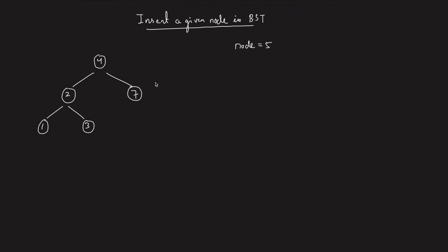Welcome back to the channel! Today we will be solving the problem: Insert a Given Node in a Binary Search Tree. The question gives you a value — say five — and you need to insert this value into the BST such that the BST property is maintained: left is smaller than the node, right is greater, and both subtrees are also BSTs. Once insertion is done, return the root of the binary tree.